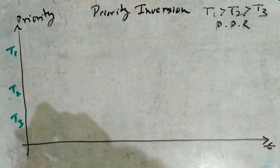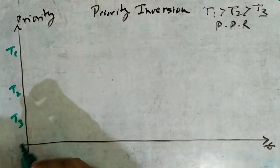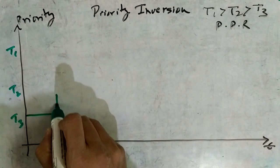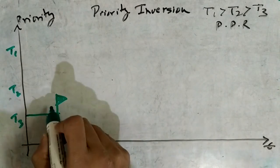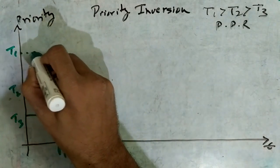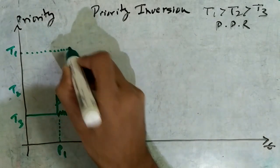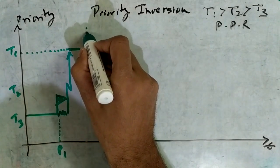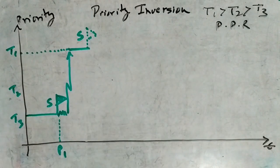We start analyzing the system at a point where T1 and T2 are done with their time slices and T3 is scheduled. T3 starts running and acquires resource S at point p1, continuing execution into its critical section. At this point T1 becomes ready, the scheduler preempts T3 and allows T1 to run. T1 now requires resource S, which is held by T3, so T1 becomes blocked.